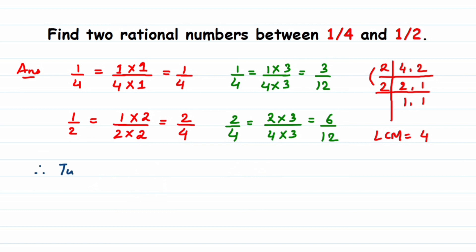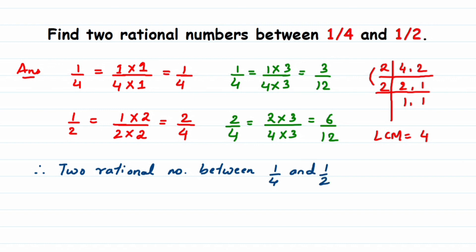Therefore, two rational numbers between 1/4 and 1/2 are 4/12 and 5/12. That's the answer. I hope you understood this. If you have a question or doubt, you can drop a comment below — thank you so much for watching.